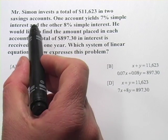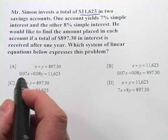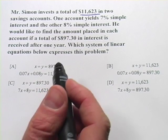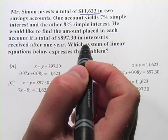This is a situation where someone invests a total amount of money in two different accounts, and they have different interest rates, different yields. So one account yields 7% simple interest and the other 8% simple interest.